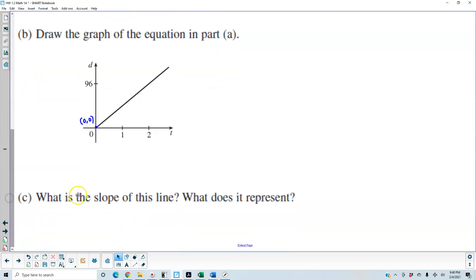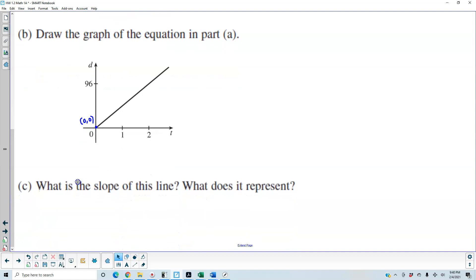This last part is asking us, what is the slope of this line and what does it represent? Well, we know from the equation that the slope is 48, which is what we found. It represents the car's speed in miles per hour.